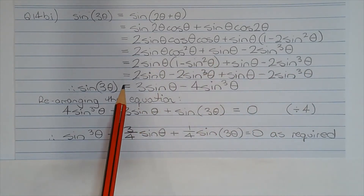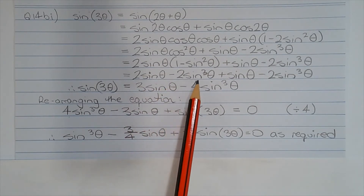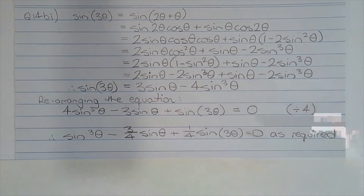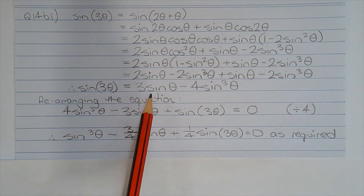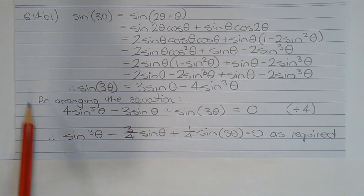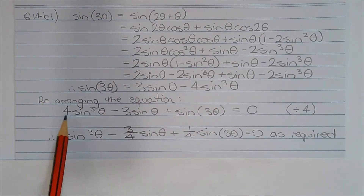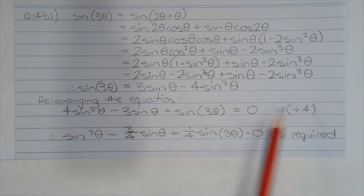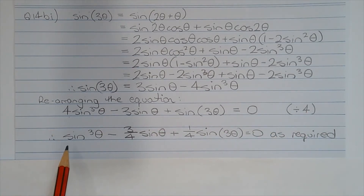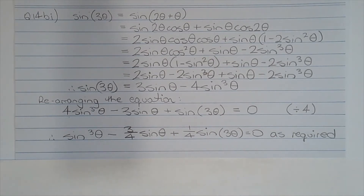Expanding the brackets, that equals 2 sin theta minus 2 sin cubed theta plus sin theta minus 2 sin cubed theta. Collecting the like terms, we get sin 3 theta is equal to 3 sin theta minus 4 sin cubed theta. The next step is to rearrange this equation by moving all the terms on the right-hand side over to the left-hand side, giving 4 sin cubed theta minus 3 sin theta plus sin 3 theta equals 0. Dividing all terms by 4, sin cubed theta minus 3 over 4 sin theta plus 1 over 4 sin 3 theta equals 0 as required.